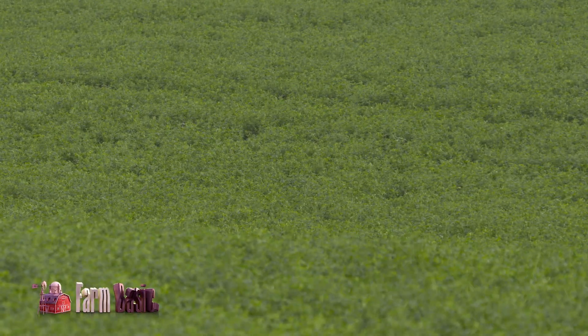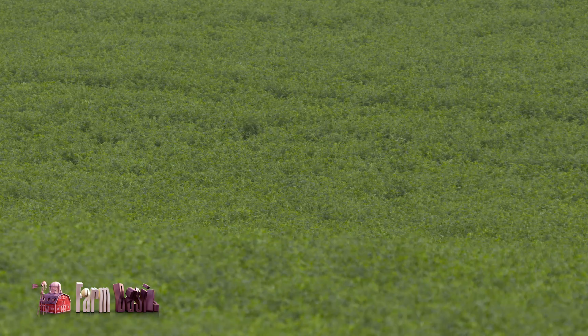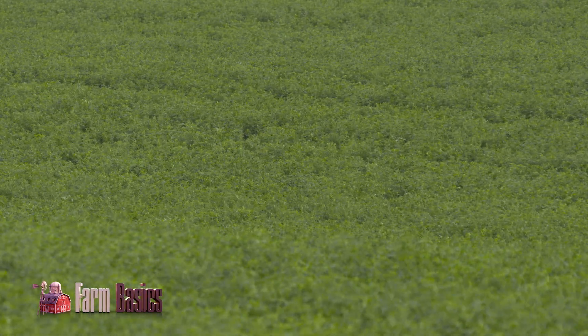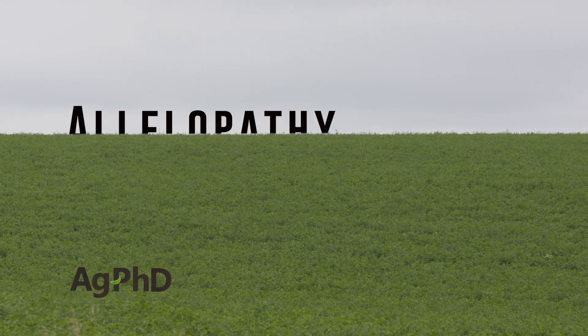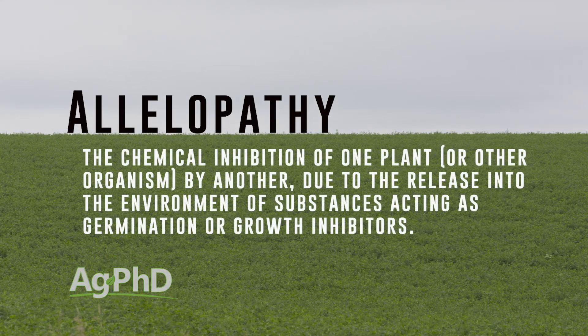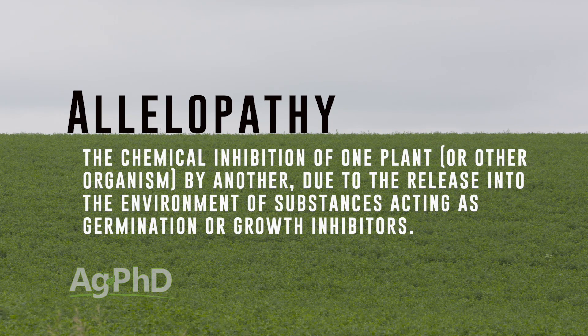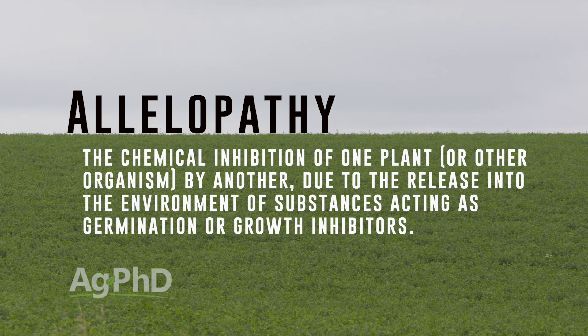Plants have many natural defense systems. We're going to talk about one of them today called allelopathy. Basically, allelopathy is when a plant puts out its own natural chemicals into the soil to prevent other plants from growing.